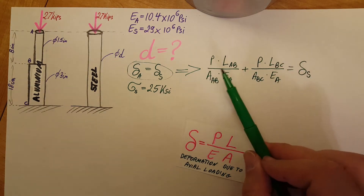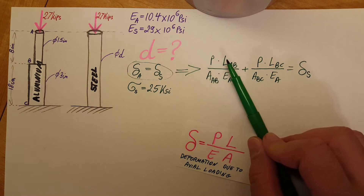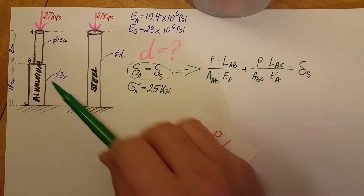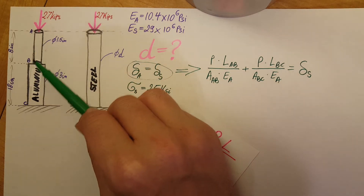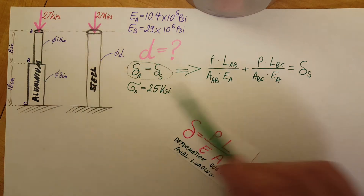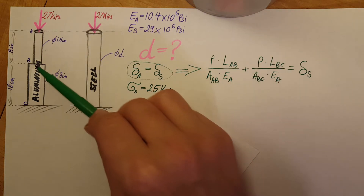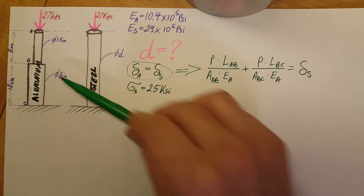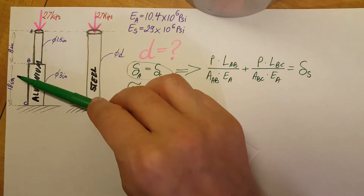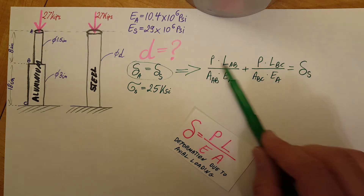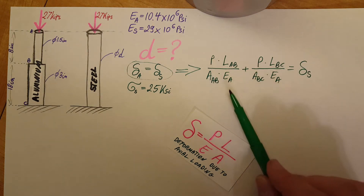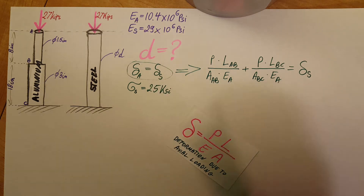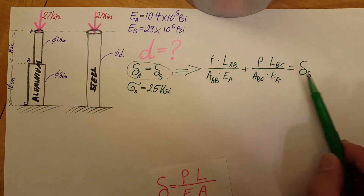We plug in values for the aluminum rod. Section A to B is one portion, and section B to C is the lower portion. They have different lengths and different cross-sections, but the same force acting on them and the same modulus of elasticity E since both are aluminum.